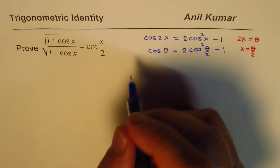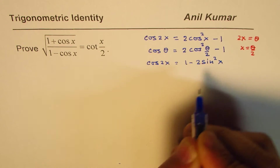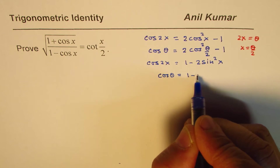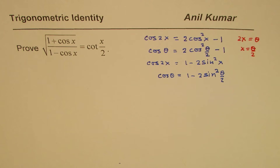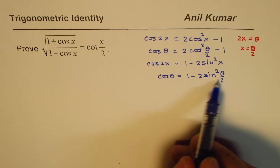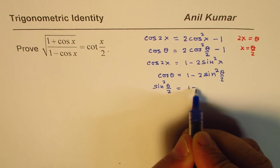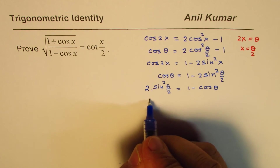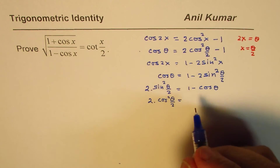Similarly, we also had another formula for cos 2x: 1 - 2sin²x. This can be modified in the same fashion to give cos θ = 1 - 2sin²(θ/2). So we've converted our formulas to half-angle formulas. Isolating the terms: sin²(θ/2) = (1 - cos θ)/2, and similarly 2cos²(θ/2) = 1 + cos θ. These are the formulas derived from the known identities.